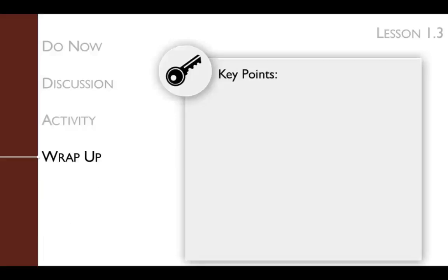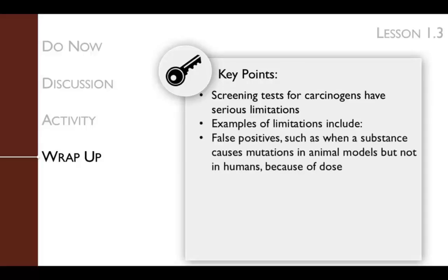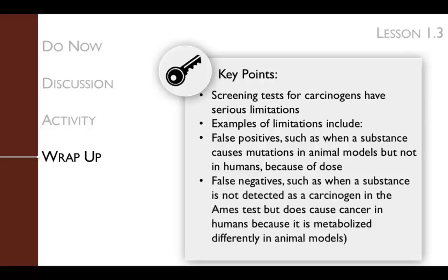The key points of the wrap-up are to discuss limitations to screening tests for carcinogens. Examples of limitations are false positives, such as when a substance causes mutations in animal models but not in humans because of dose, or false negatives, such as when a substance is not detected as a carcinogen in the Ames test but does cause cancer in humans because it is metabolized differently in the animal models.